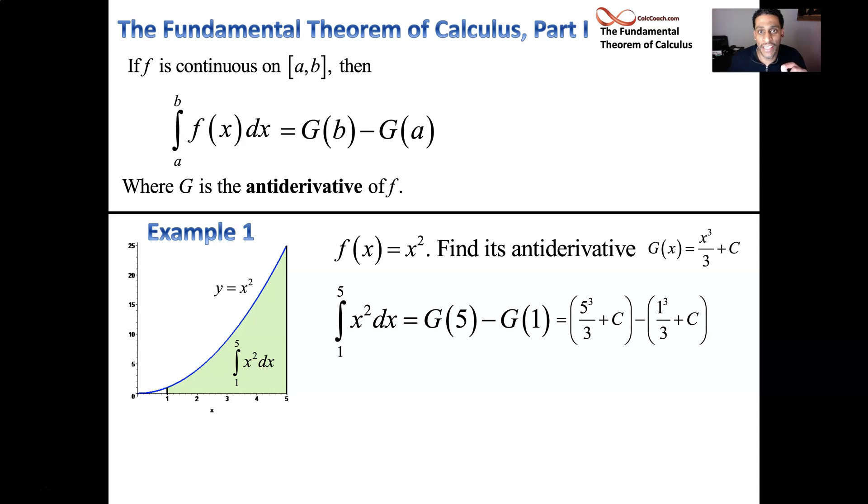You don't really need the plus c. In an indefinite integral, you need the plus c. Indefinite integral is the one without the bounds. But in a definite integral, the c's are going to cancel out anyway. And so you don't need them. Don't use them in a definite integral, but use them in an indefinite integral. And so we just get 124 over three, and we get it in no time flat.